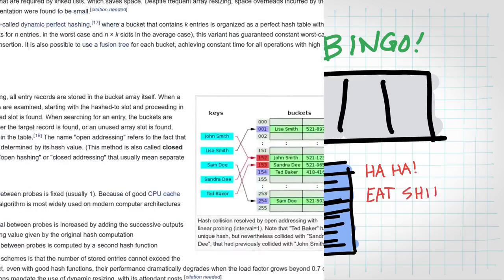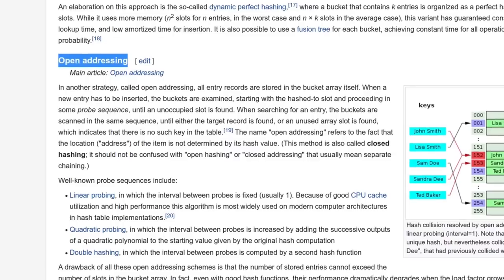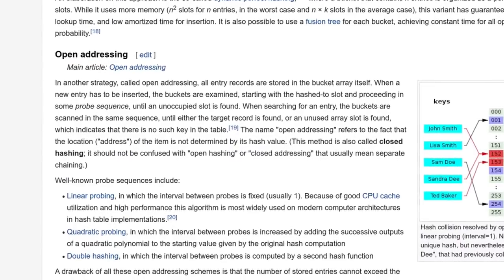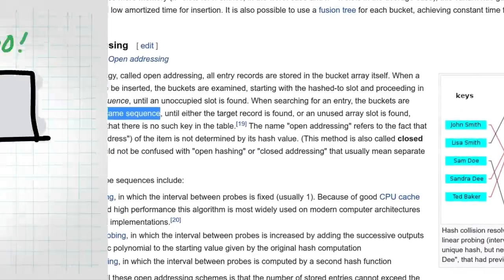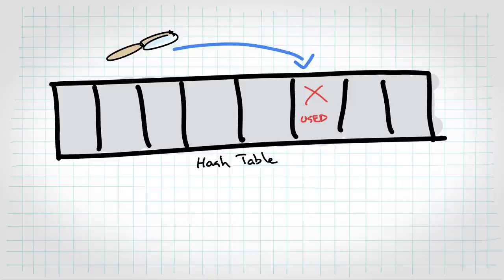The other generally used approach is something called open addressing, which is a fancy way of saying that you're going to keep trying new buckets until you find a free one. So in our hash table, if this bucket is used, let's say your two keys hash to the same bucket again, you just move on to another bucket using some predetermined approach.